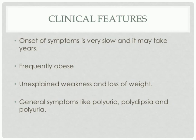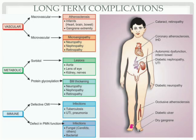What are the long-term complications of type 2 diabetes mellitus? There are complications at the vascular level, the metabolic level, and the immune level. At the vascular level, it can affect small blood vessels and large blood vessels. The microvascular complications are mainly neuropathy, nephropathy, and retinopathy.